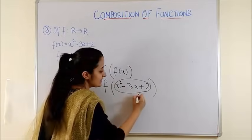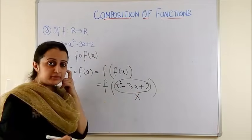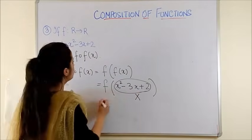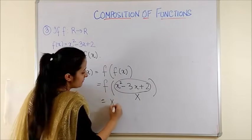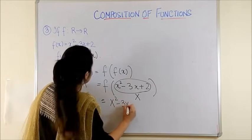So just to understand, let's say I call this as capital X. So F of capital X would give us capital X square minus 3X plus 2.